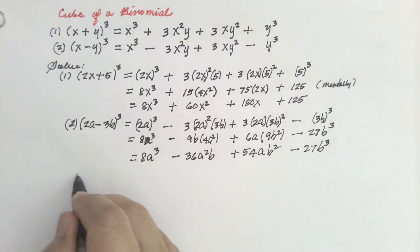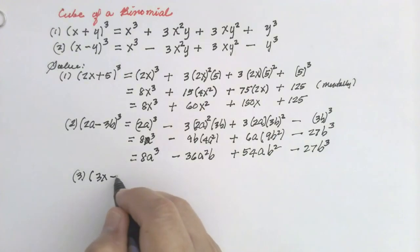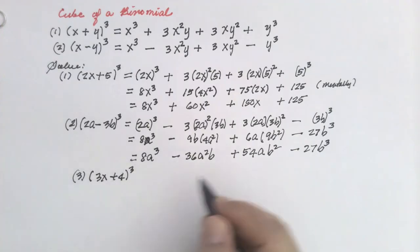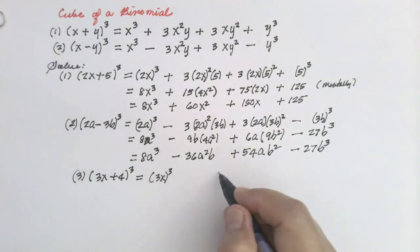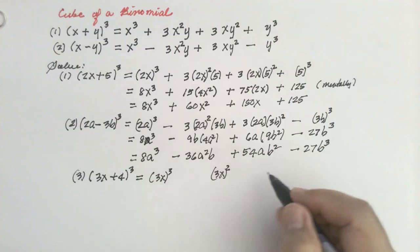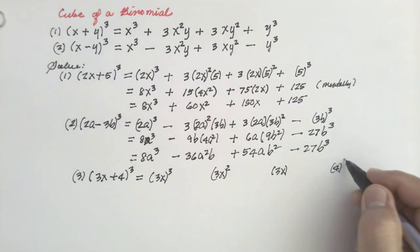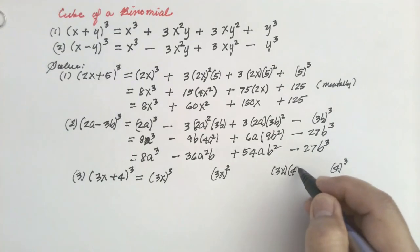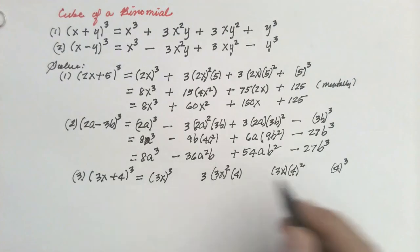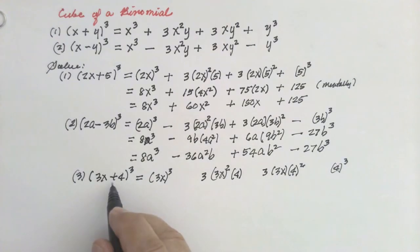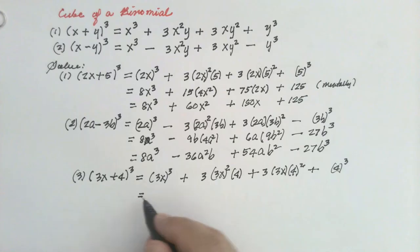Number 3: let's say we are asked to cube (3x + 4). So again, write 3x cube, then 3x square, then 3x raised to 1. Then write 4 cube, 4 square, then just 4. Write the coefficients 3 and 3. Since this is plus, all signs are positive: plus, plus, plus.